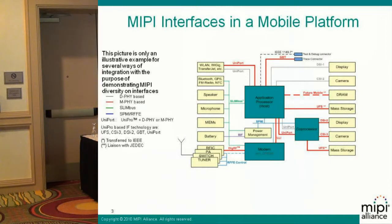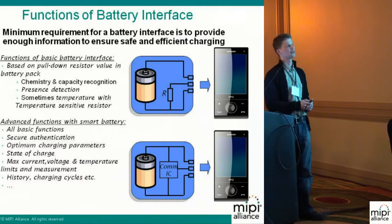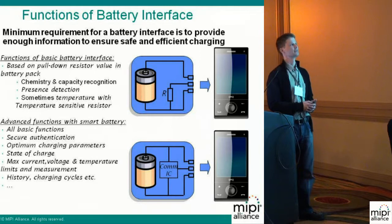Here's the big picture of a typical mobile system. The battery interface would typically be between the power management unit and the battery pack. We have the power lines, but then we also have a communication line. So, what are the functions of the battery interface?